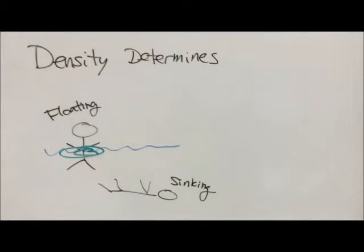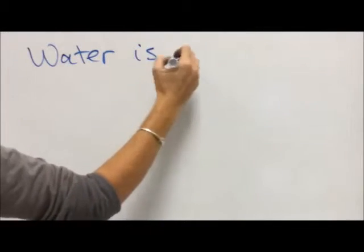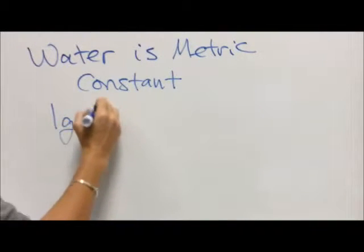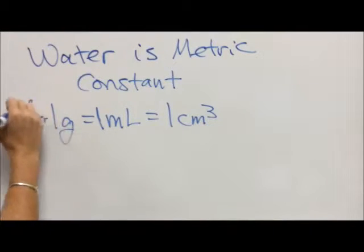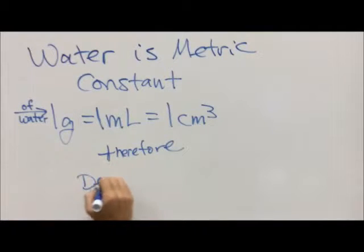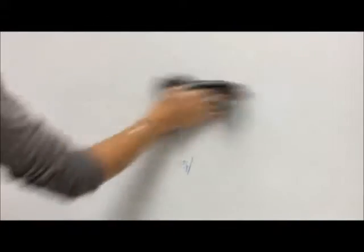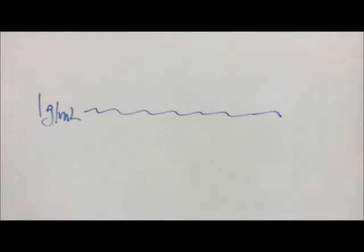When we go swimming or put something in water, some things float, some things sink. To start out with, we need to understand that water is our metric constant substance. One gram of water is equal to one milliliter of water is equal to one cubic centimeter of water. Therefore, when we take mass divided by volume, one gram divided by one milliliter gives us one gram per milliliter. Water is our constant. It's the thing we measure most things to because it's definitely the most abundant liquid on Earth.